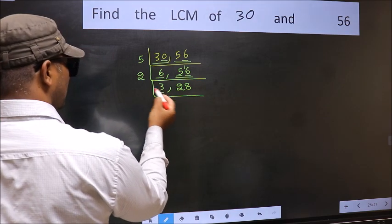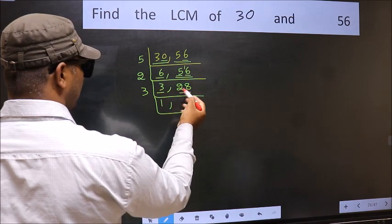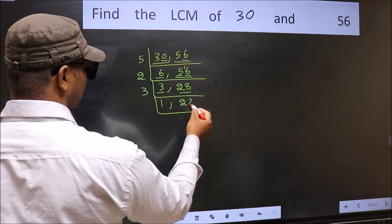Now here we have 3. 3 is a prime number. So 3, 1 is 3. The other number 28 not divisible by 3. So we write it down as it is.